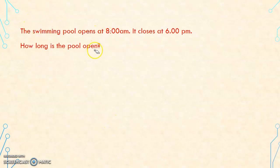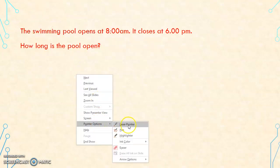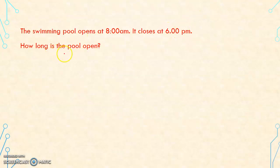The swimming pool opens at 8 a.m. It closes at 6 p.m. How long is the pool open? So what time it starts? It starts at 8 a.m. What time does it stop? It closes at 6 p.m. So we have to find the time difference between 8 a.m. and 6 p.m.